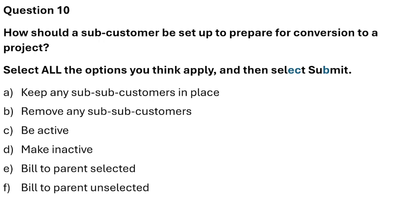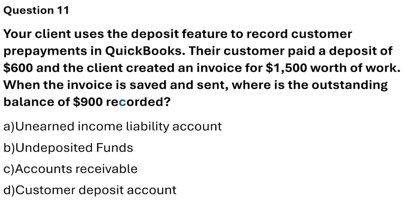Question 10: How should a sub-customer be set up to prepare for conversion to a project? There are six options. The three correct answers are: Option B — remove any sub-customers; Option C — be active; and Option E — bill to parent selected.